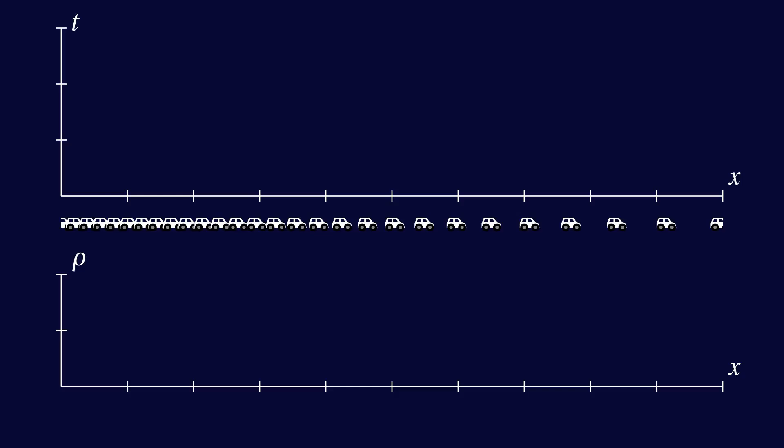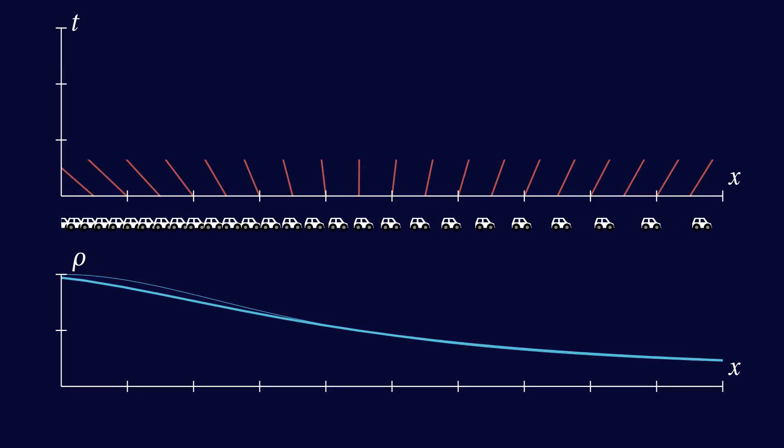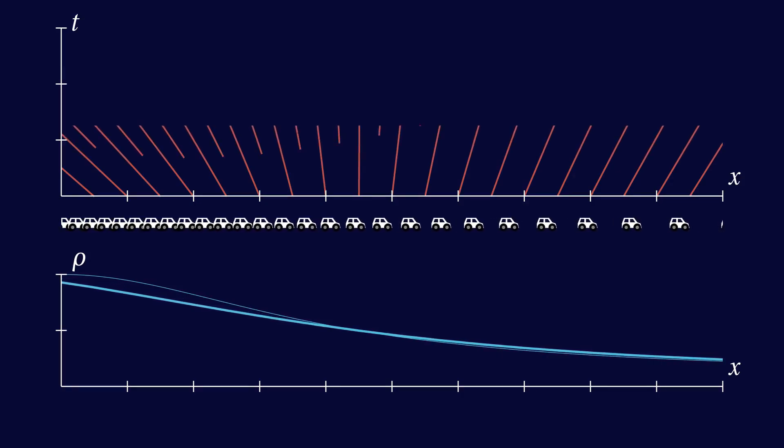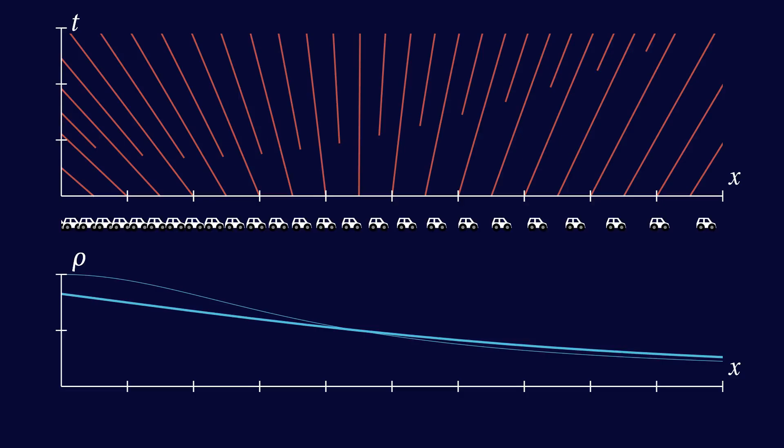When the initial traffic density is decreasing along the road, like this, the characteristics will fan out. The gaps between characteristics are not a problem, because mathematically there are infinitely many of them. The gaps are there because we chose to draw only a few, so if we find that a gap is getting too big, we can simply draw an additional characteristic in the gap. Or if you prefer, we could have drawn these extra characteristics from the start.